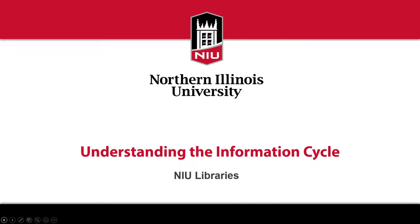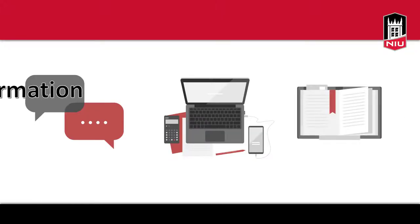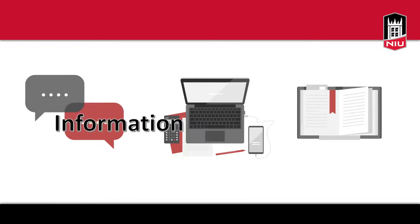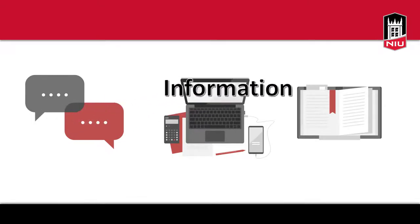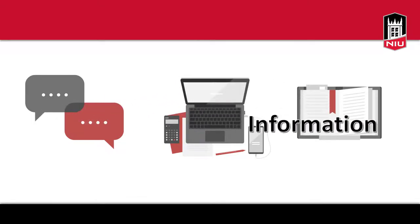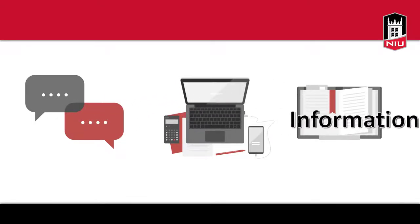In this tutorial, you'll learn about the information cycle and what type of information is available on a topic when and in what format. The information cycle refers to how information progresses through different formats and for different audiences in the days, weeks, months, and years following an event.